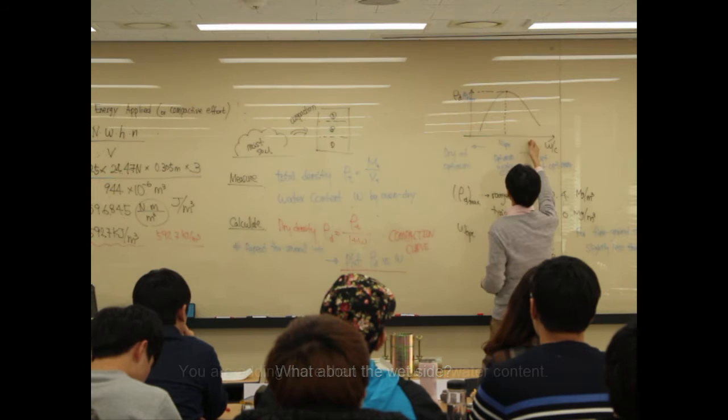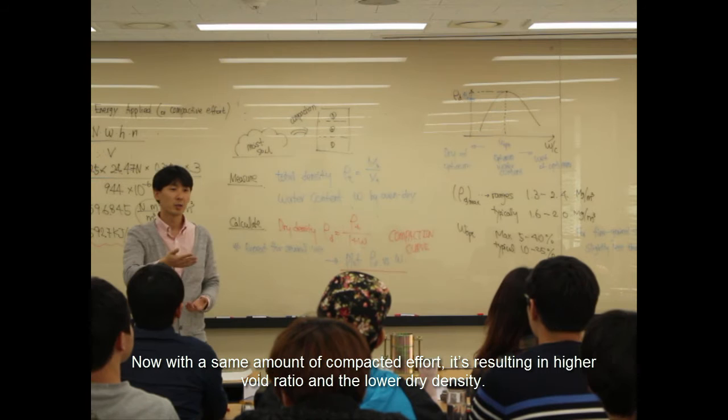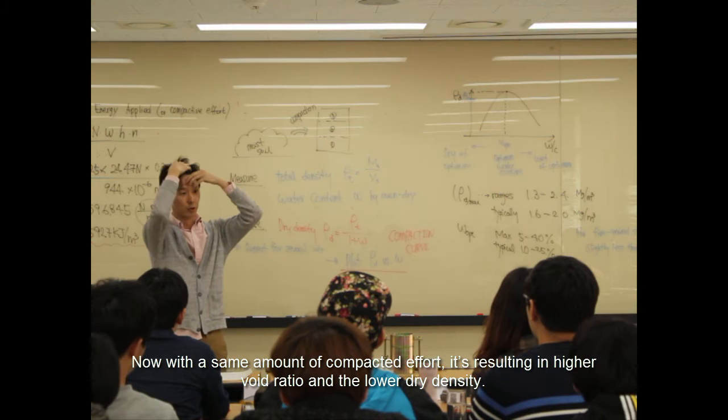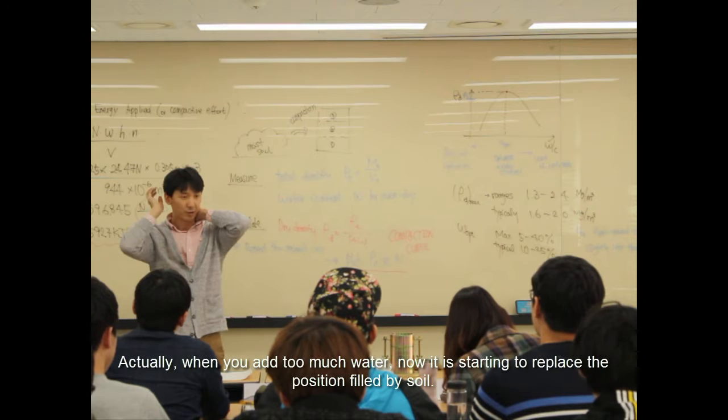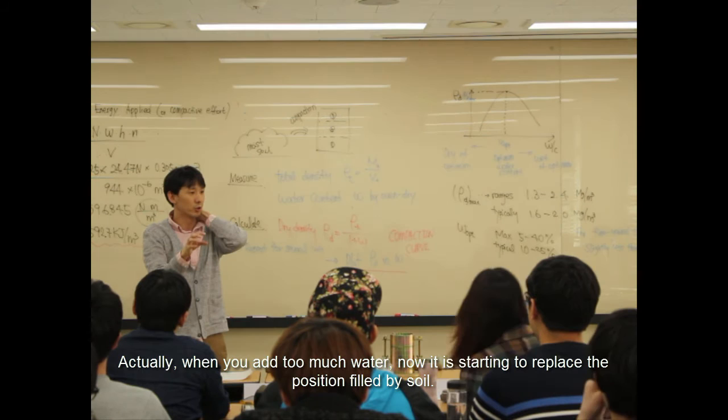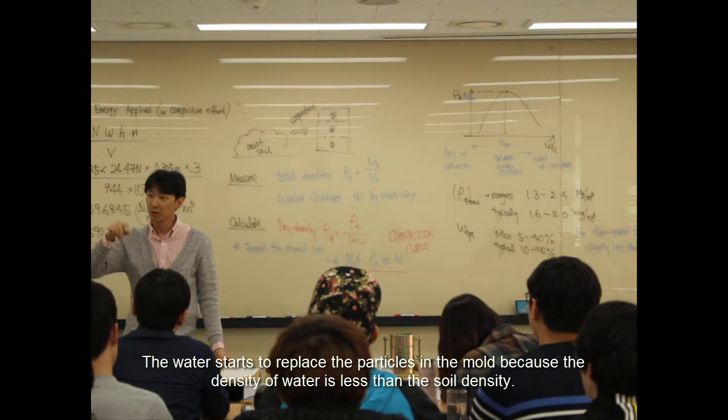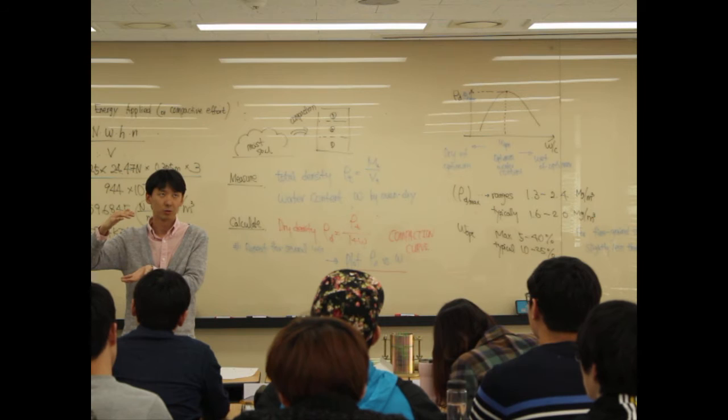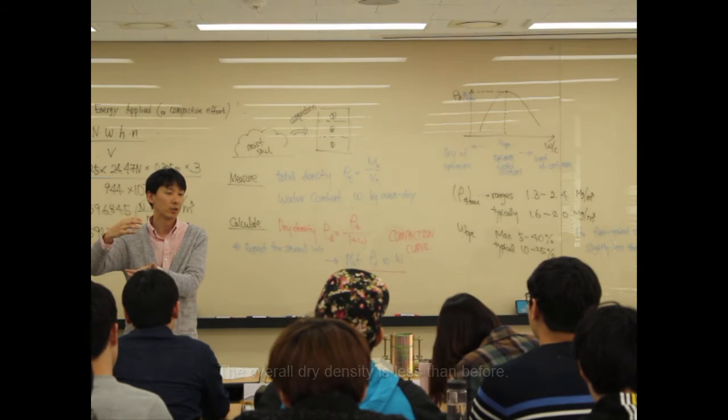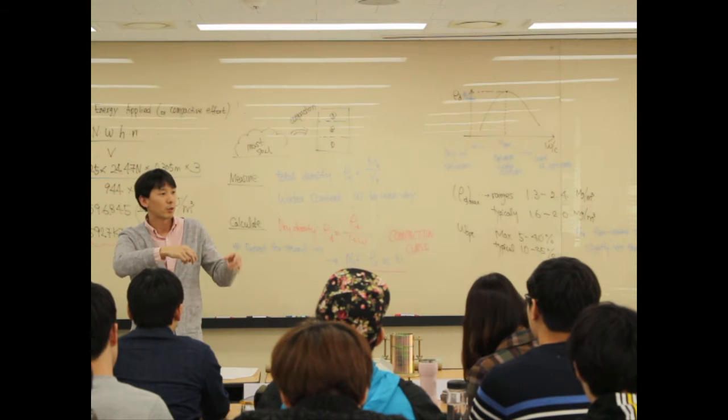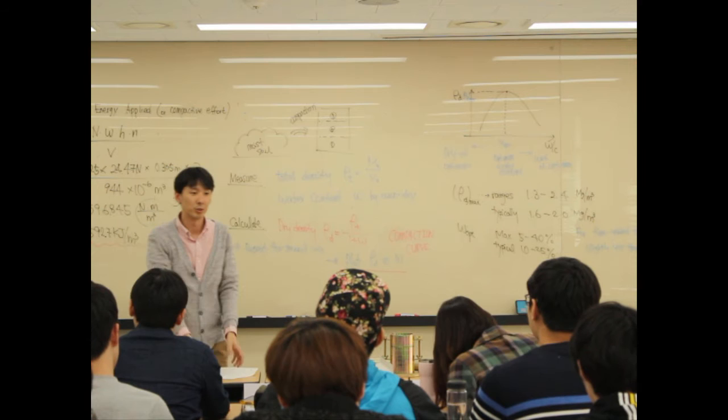What about the wet side? Now you're adding more than the optimal water content. With the same amount of compacted effort, it's resulting in a higher void ratio and a lower dry density. When you add too much water, it starts to replace the position of the soil particles. The water starts to replace the particles in the mold because the density of water is less than the solid density. In the end, it results in lower total dry density. The overall dry density becomes less than before. The water is adding too much so that the grains cannot penetrate and make it more dense.